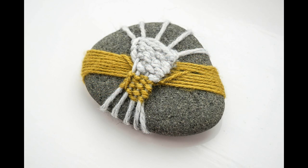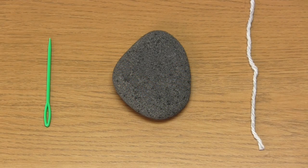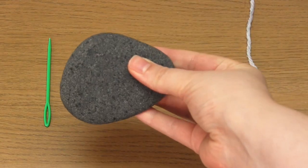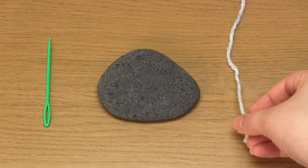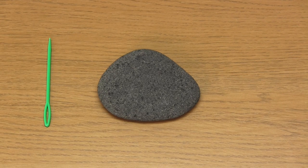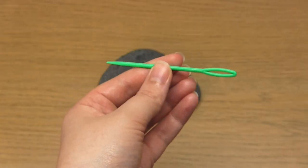Okay so to follow along you're going to need some yarn, a pebble and a yarn needle. The more symmetrical and flatter the pebble the better and it also helps if the sides are relatively straight. In terms of the yarn anything will do but I think medium weight is best. Try and choose colours that contrast with the pebble colour.